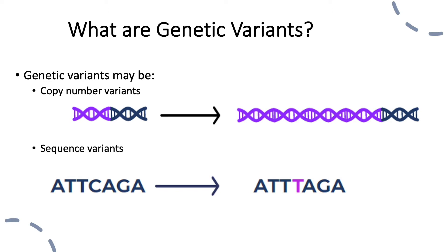Another type of variant is called a sequence variant. Sequence variants are small changes in the DNA. Our DNA is made up of the letters A, T, G, and C. A sequence variant changes a single letter or a few letters in the DNA sequence. In the example displayed on the screen, the sequence variant involves a C being exchanged for a T. If our genome is a library, a sequence variant is like a spelling error in one sentence in one of the books.